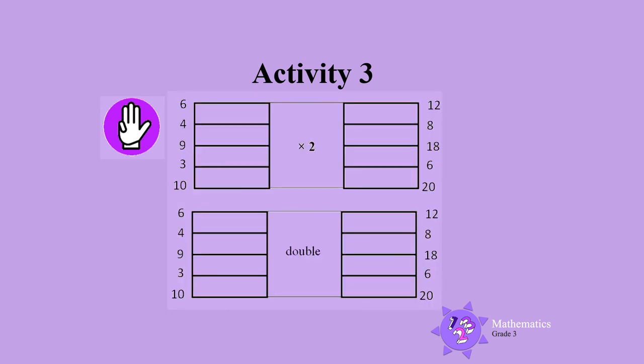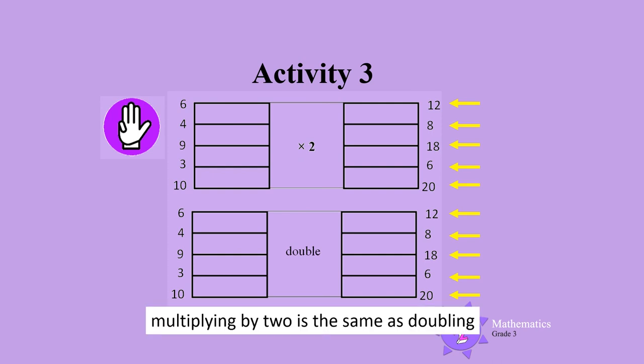Let's look at both the flow diagrams that we just completed. What do you notice about the answers in both flow diagrams? Can you see that multiplying by 2 is the same as doubling? Don't forget to keep practicing!